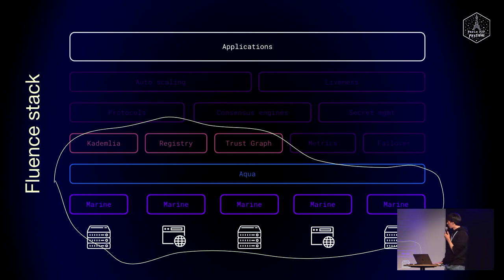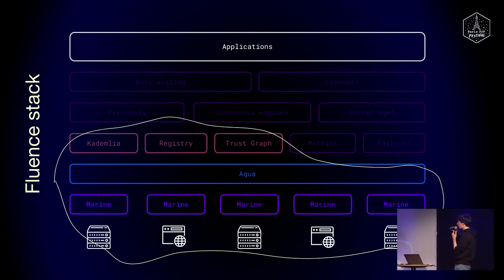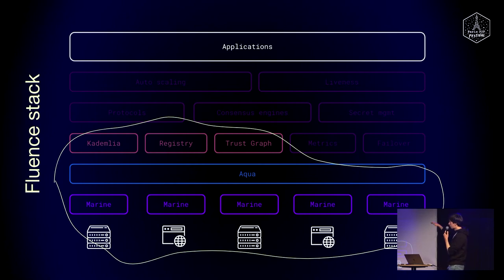If you think of the Fluence stack, we are trying to reinvent the whole cloud stack from bottom to top. We have execution of functions, a control plane for functions, and then we build abstractions on top — unlocking features like failover, clusters, replication, consensus, load balancing, and autoscaling. Right now, the lower layers exist and applications can already be built with the tooling that exists.